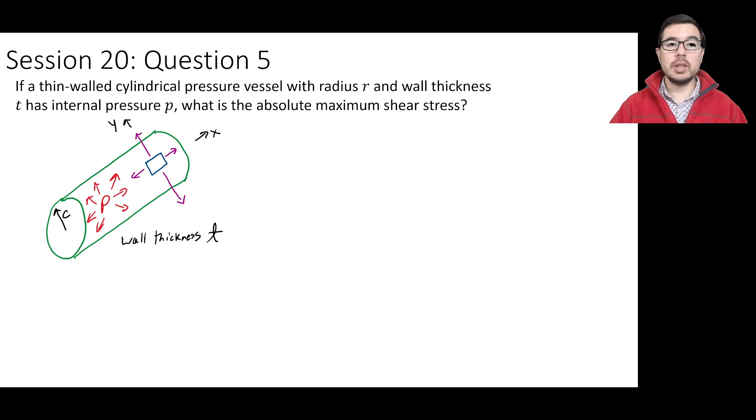So we have here hoop stress, which is going to be sigma y, and for a thin-walled pressure vessel that is cylindrical, we can say that's going to be the internal pressure times the radius divided by t. For the sigma x, the longitudinal or axial stress, the thin-walled cylinder will have a stress in the longitudinal direction, sigma x, of pr over 2t.